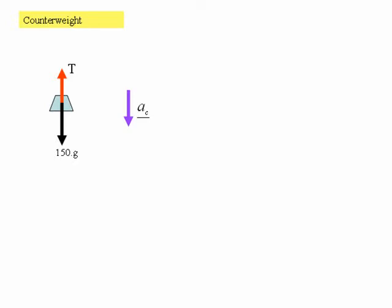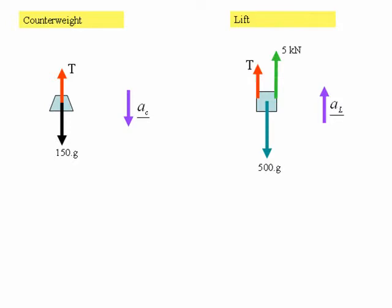Now considering the lift — again, ask yourself what forces are acting on the lift. There's gravity acting downwards, which is the mass of the lift, 500 kg, times G. And then upwards we've got two forces: the tension in the left-hand cable, which is equal to T again, and the right-hand cable, which has a tension of 5 kilonewtons, because the motor supplies a constant force of 5 kilonewtons on the cable at B.